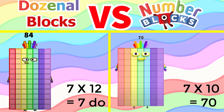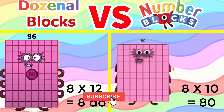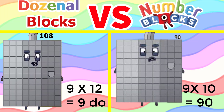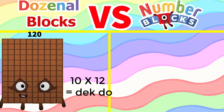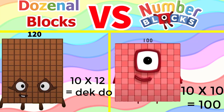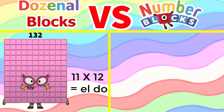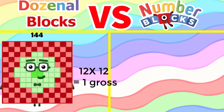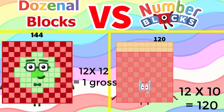7 times 10 equals 70. 8 times 12 equals 8 do. 8 times 10 equals 80. 9 times 12 equals 9 do. 9 times 10 equals 90. 10 times 12 equals 10 do. 10 times 10 equals 100. 11 times 12 equals 11 do. 11 times 10 equals 110. 12 times 12 equals 1 gross. 12 times 10 equals 120.